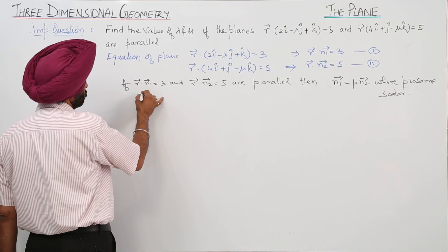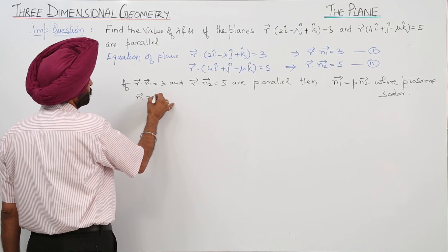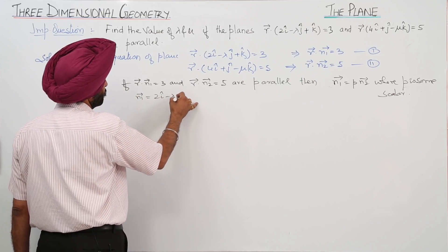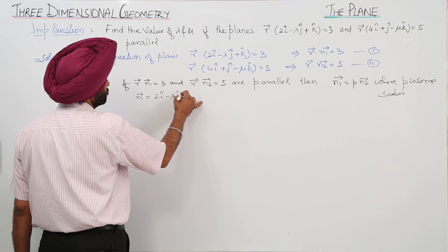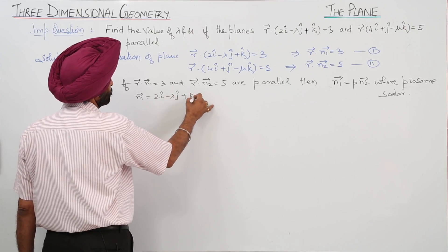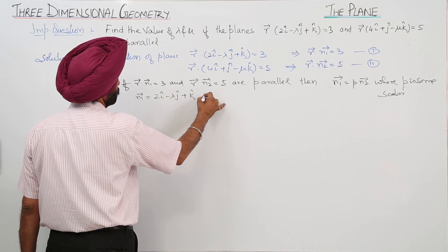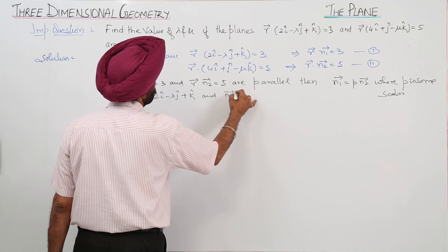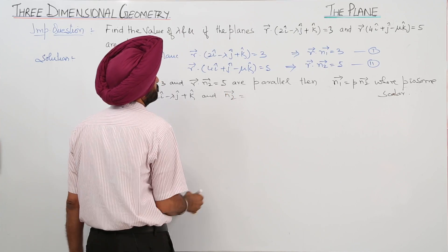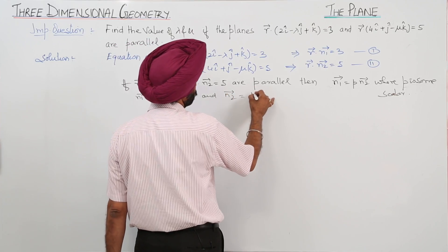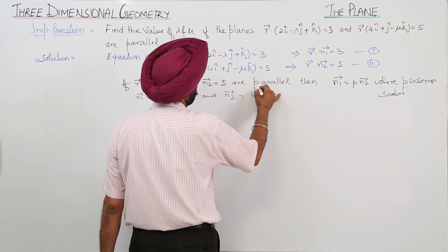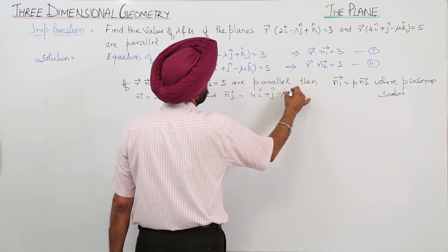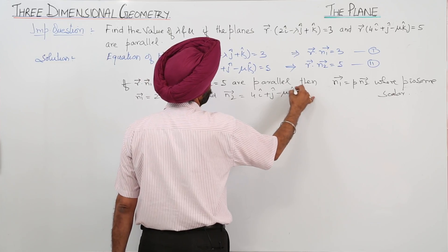Vector n1 is 2i cap minus lambda j cap plus k cap, and vector n2 is equal to 4i cap plus j cap minus mu k cap.